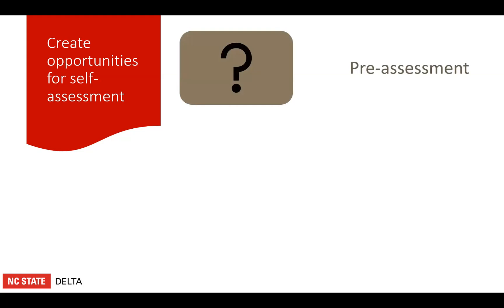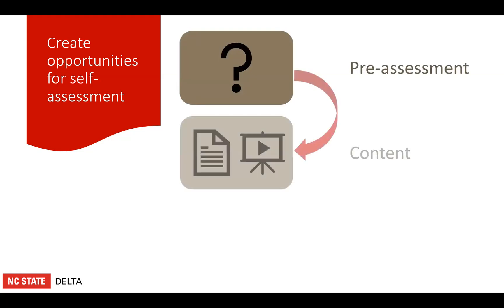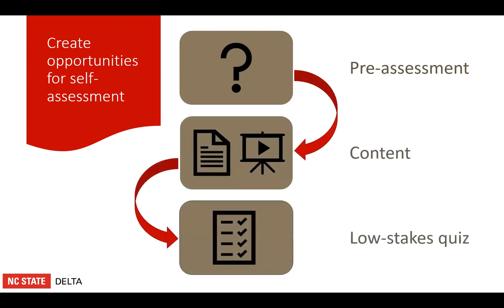Another good way to encourage engagement with online course content is to provide ways for students to check their understanding or self-assess as they watch a video or read an article or chapter. Pre-assessments can help students know what to look for in the content, and then low-stakes quizzes after they've read the article or watched the video can help them check and solidify what they've learned.